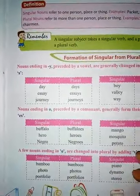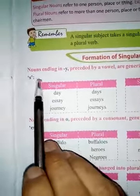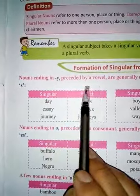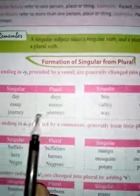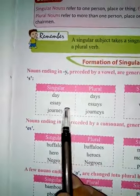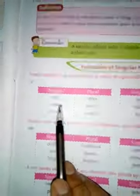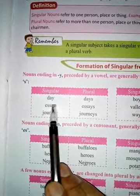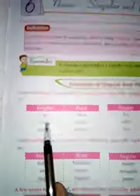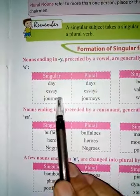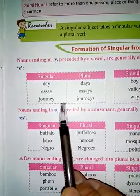Now, I want to go into details. Nouns ending in Y preceded by a vowel generally form their plural by adding S only — they form plural number.